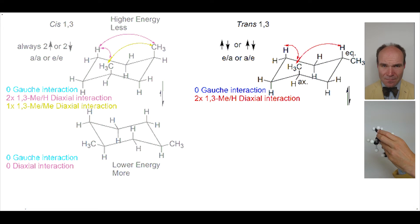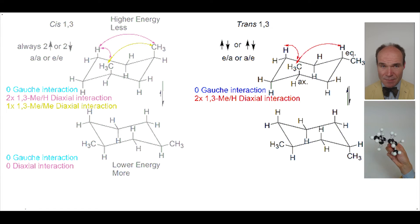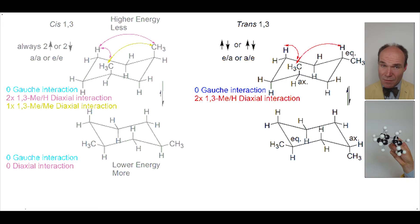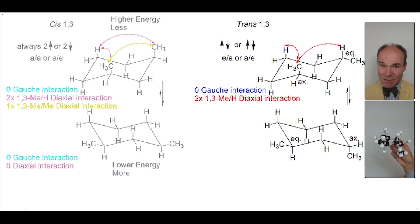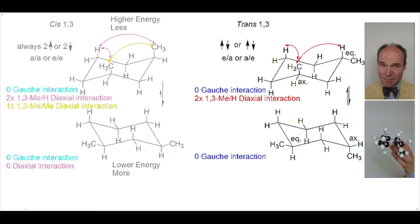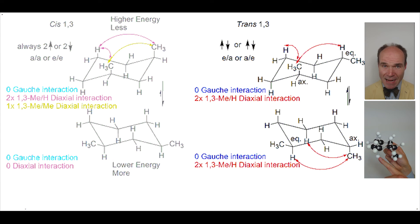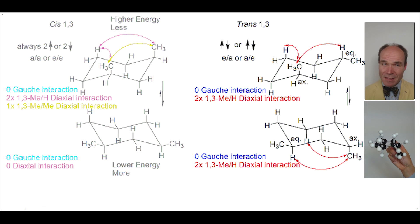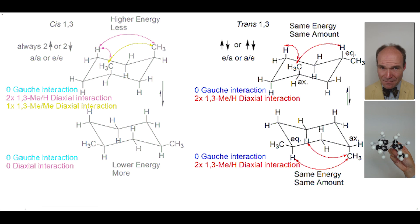Let's ring flip this chair. The alternate chair conformation has a methyl group in an axial position and a methyl group in an equatorial position. The methyl group that was axial in the original chair is now equatorial in the alternate chair, and the methyl group that was equatorial is now axial. Again there are no gauche interactions, but we do have two 1,3-diaxial interactions between a methyl group and a hydrogen — the same as the first chair. So the two chairs have the same amount of energy and are in the same abundance as a result.